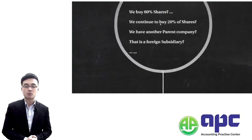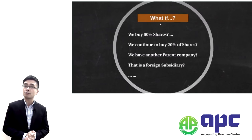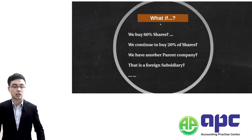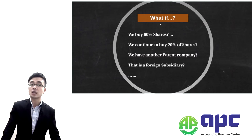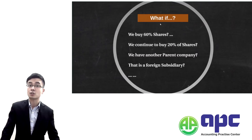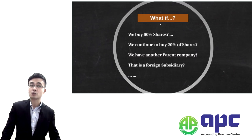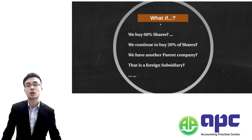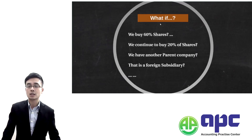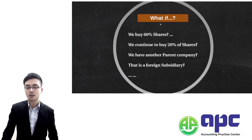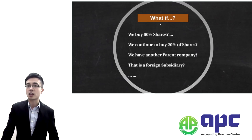In the Paper 2 exam there will be quite a few complications. For example, what if we were to buy 60% of shares rather than 100%? In that case we have to recognise the non-controlling interests for those shareholders who do not control the company — and we use two ways to account for it. Also, what if there's a change in ownership?